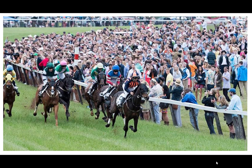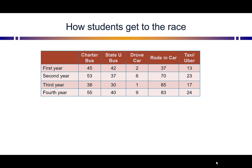For our main example, it's about going to a race and how different people get there. We have students who are first, second, third, and fourth years in each row. Then we have five different ways they would get to the race: by charter bus, by a bus from the state university, they drove their car, they rode in a car, or they took shared transit like taxi or Uber.